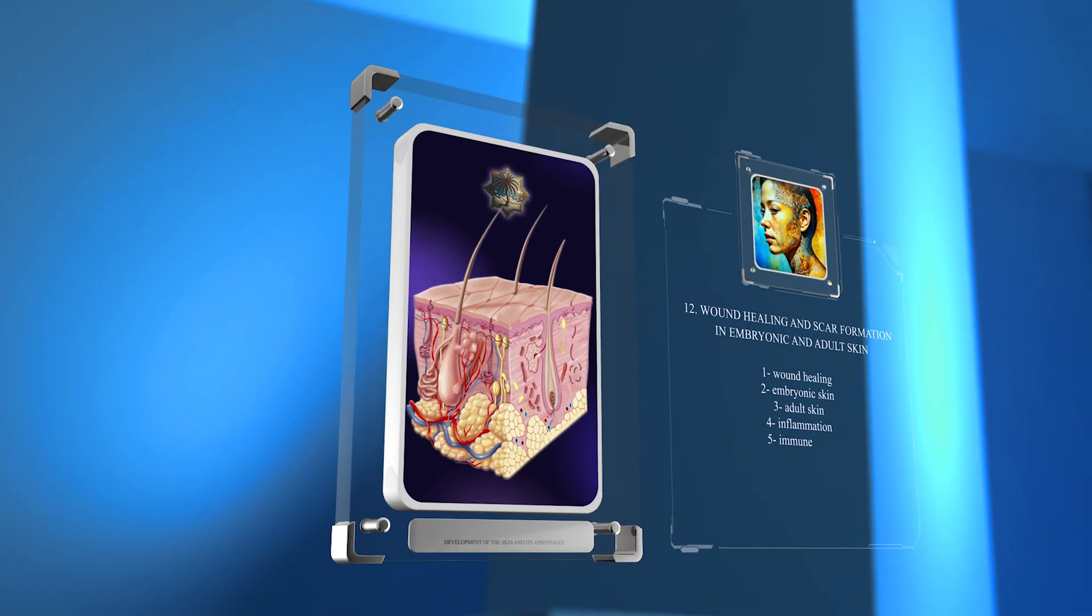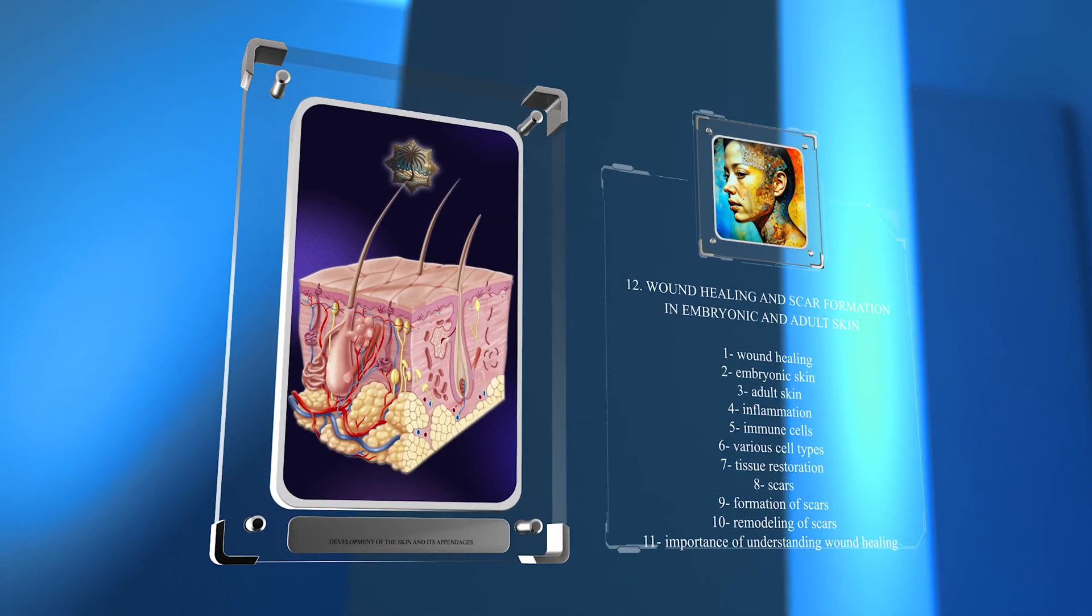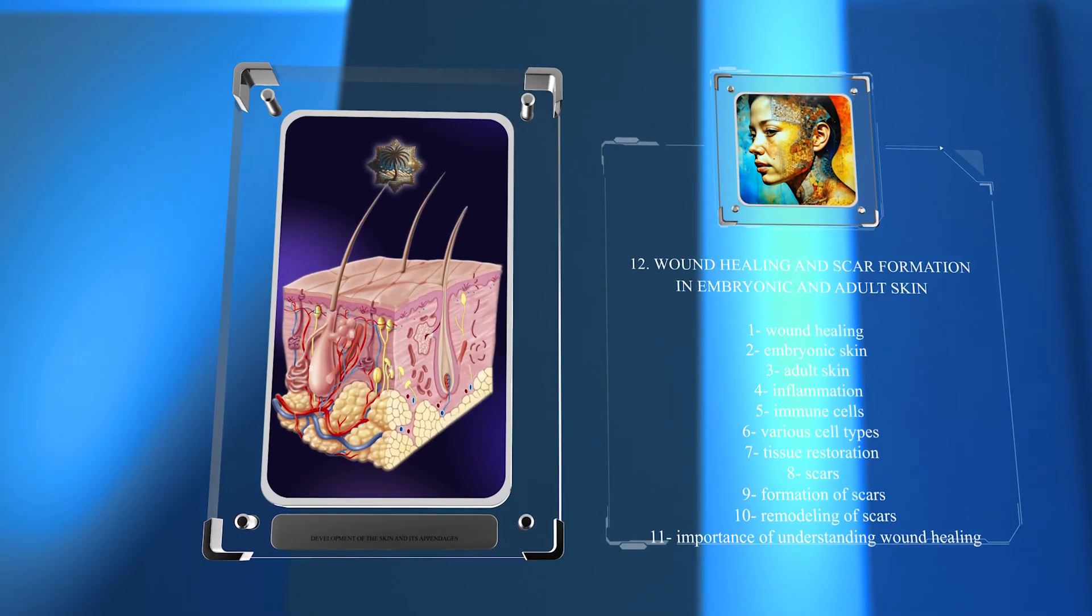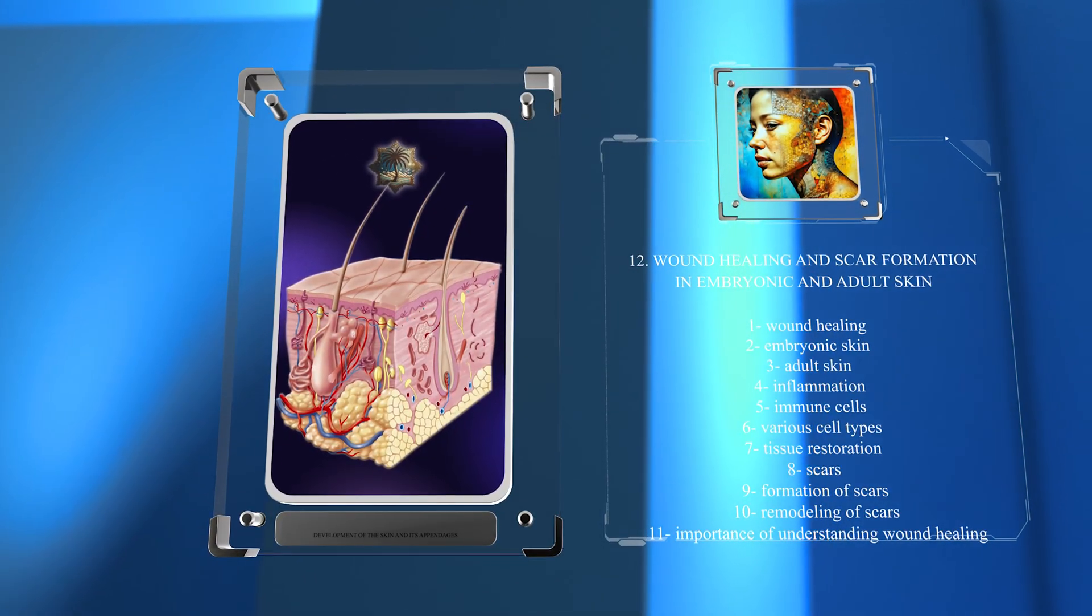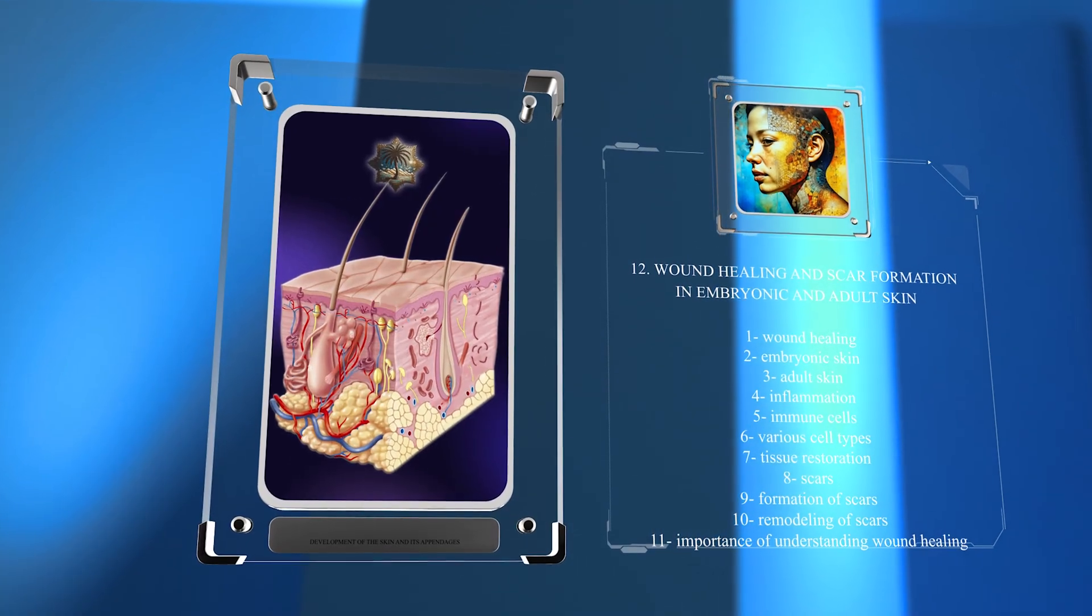We will explore the process of wound healing in both embryonic and adult skin. We will examine the role of inflammation, immune cells, and various cell types in tissue restoration. Additionally, we will discuss the formation and remodeling of scars and the importance of understanding these processes for tissue regeneration.